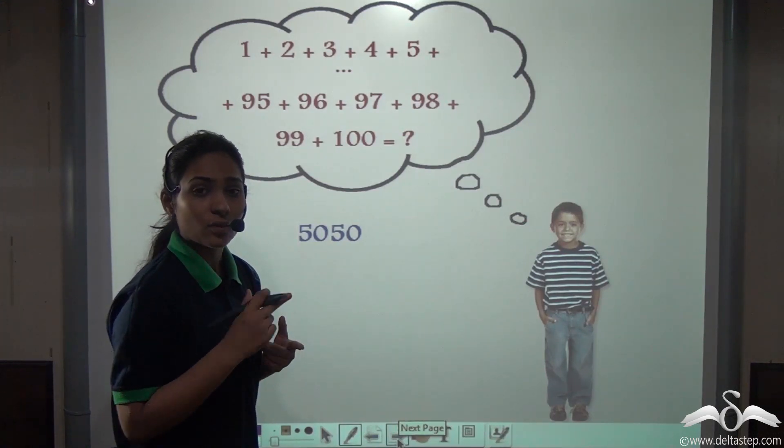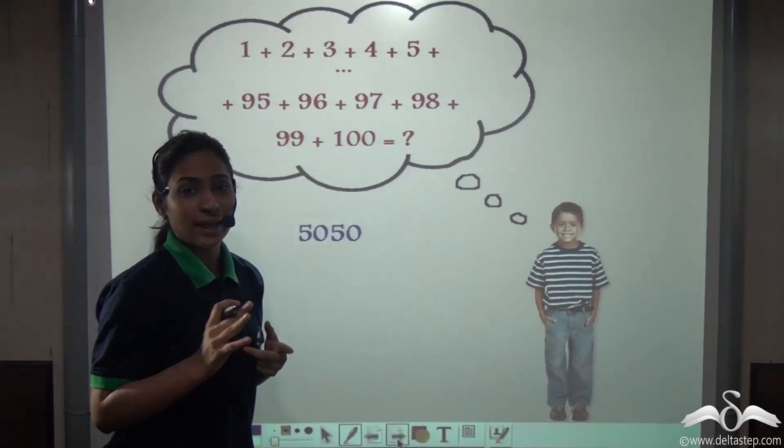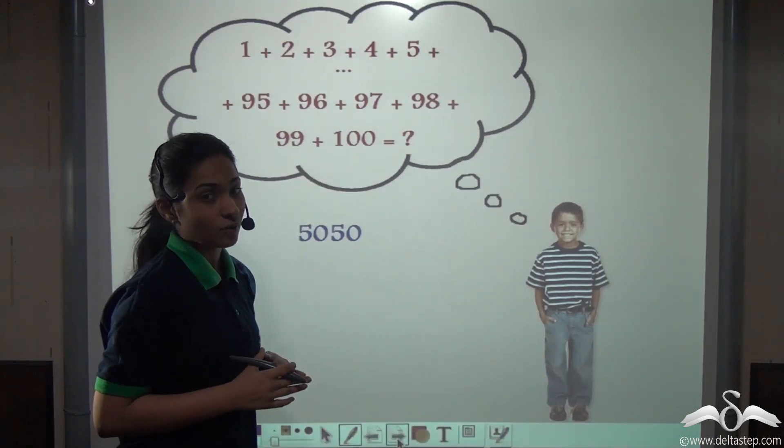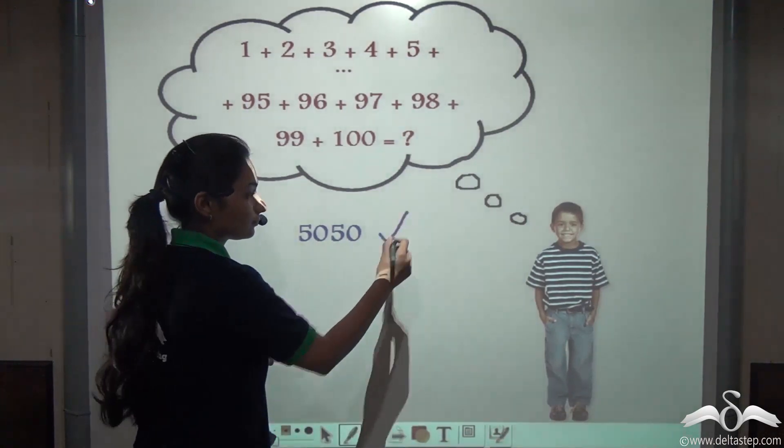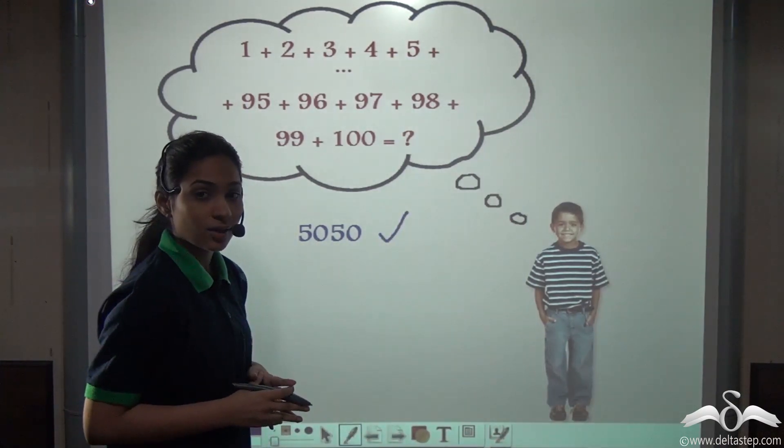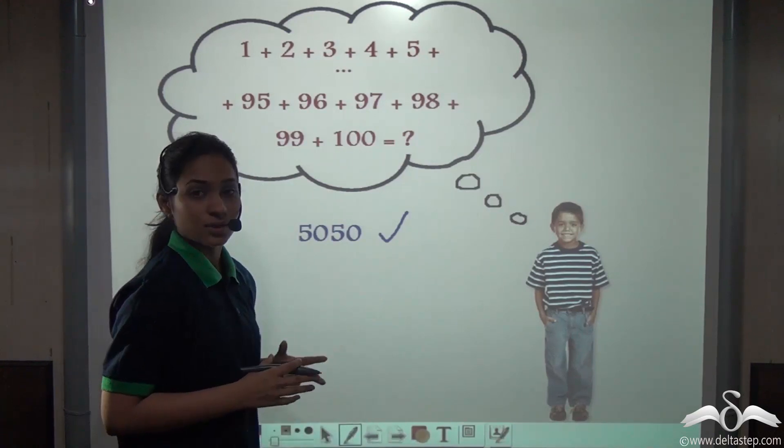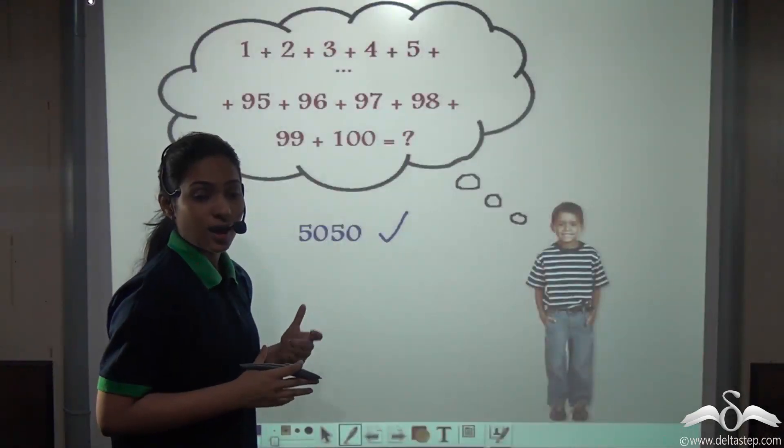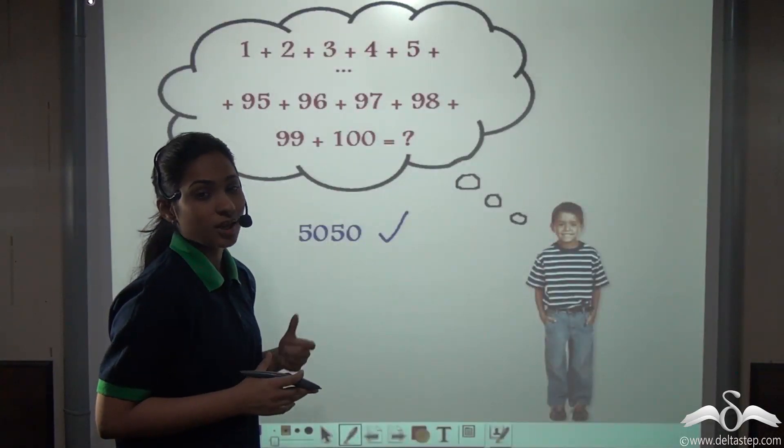The teacher was surprised. How did Karl do that so quickly? The teacher counted the numbers, spending the next ten minutes on it, and found that Karl's answer was correct. Do you know that this Karl became the famous mathematician Karl Gauss?